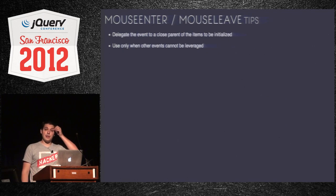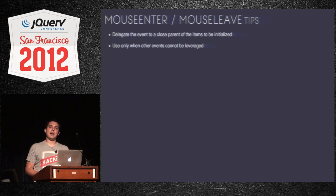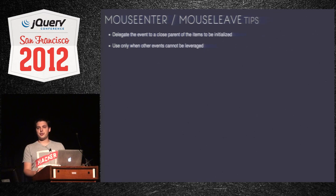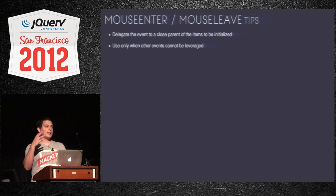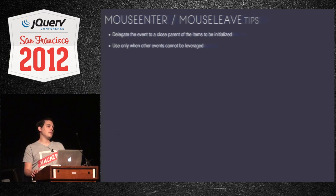When you delegate something involving mouse events, try to get the top-level container as close to the affected items as possible. If all those div items were inside a UL, make the extra expense of finding that UL to delegate against — so you're not binding to a thousand elements but delegating to the parent, meaning fewer events bubbling up that have to fail the test. Mouse enter is kind of your last resort; if you can't use any of the other events and triggers, then maybe it's right for you.